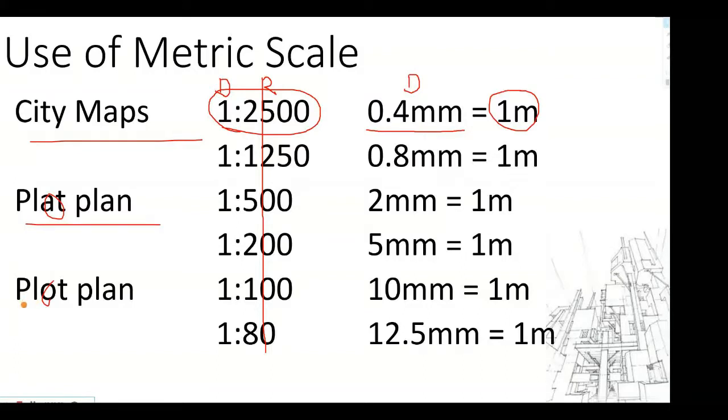So for plot plan, what are the metric scales we can use? We can use 1 is to 100 or 1 is to 80. 1 is to 100 is the most common and actually like the most basic metric scale. Why? Because the interpretation of 1 is to 100 is that for every 10 millimeters, that's equivalent to 1 meter. Or we can also say, since 10 millimeters is equivalent to 1 centimeter...